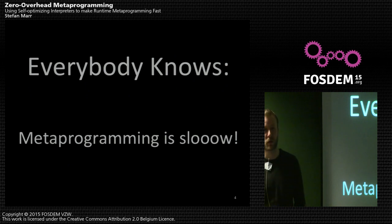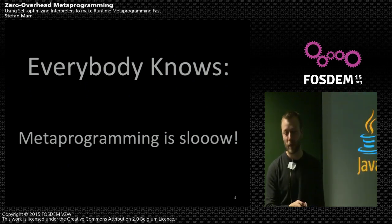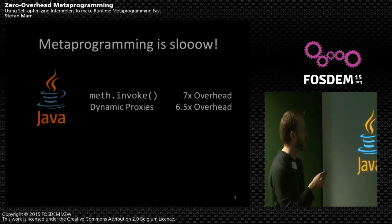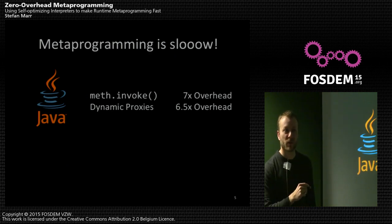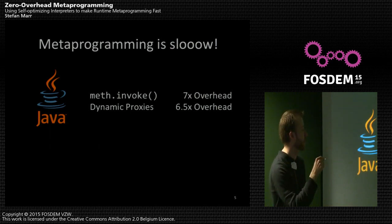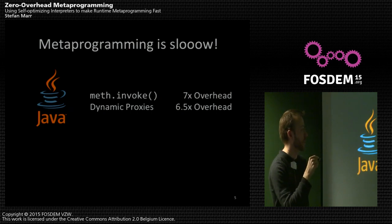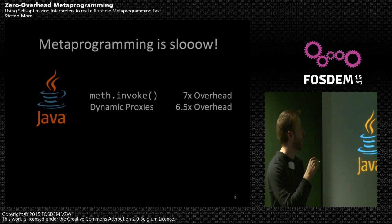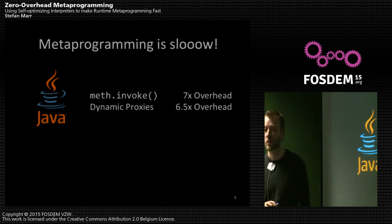Everybody knows metaprogramming is slow. Why? Because of Java, for instance. But it's not all that much better if you're working with COG, because COG at the moment also is not optimizing it. When we measure a method invocation, we see roughly a 7x overhead — about the same order of magnitude in Pharo or Squeak. Same thing with dynamic proxies: on the JVM you also see about a 7x overhead. So it's much slower than it should be.